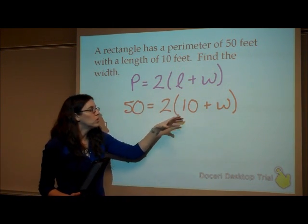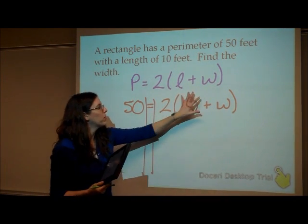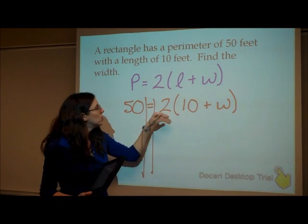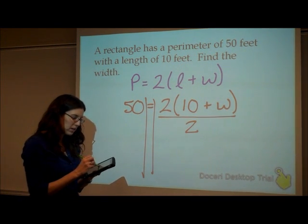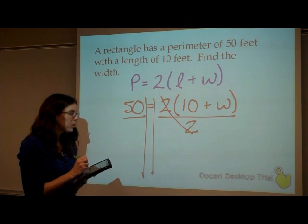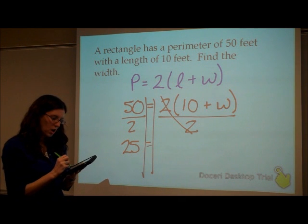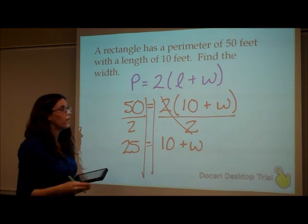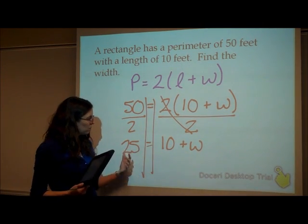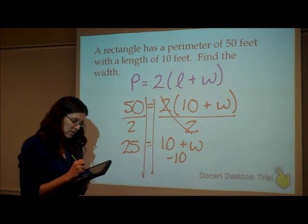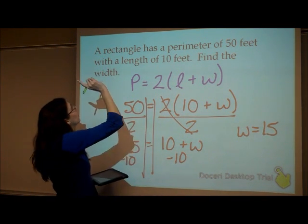Now, to solve, to start solving this, I'm trying to find the W. Well, I need to figure out what this parenthesis would equal. So I need to get rid of this 2 first, because this is all grouped together. So if I divide this side by 2, that'll cancel that out. But then I have to divide over here by 2. So that 10 plus W would equal 25. 2 times 25 would give us 50. So now, I have 10 plus W equals 25. I need to subtract the 10. So I know that the width is 15 feet.